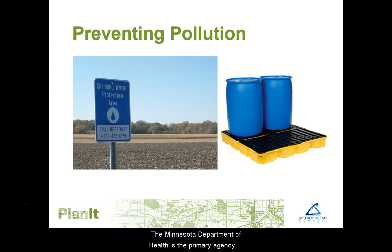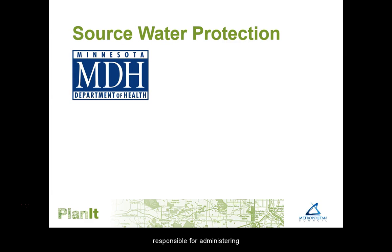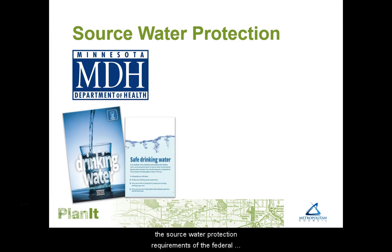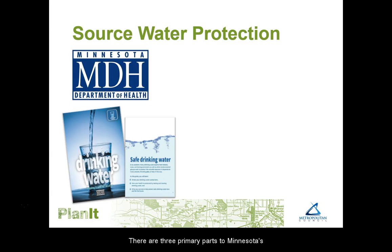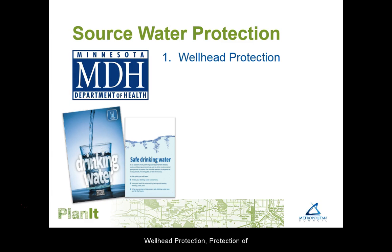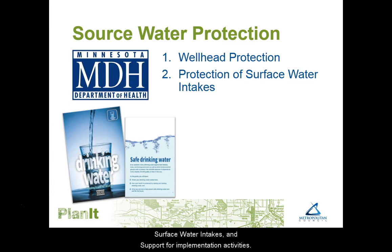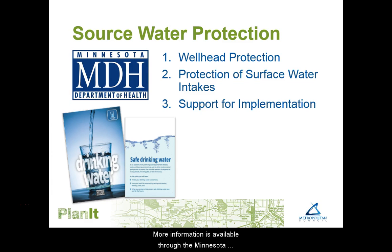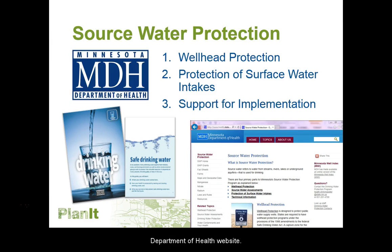Public health is protected and the expense of treating polluted water or building new infrastructure is avoided. The Minnesota Department of Health is the primary agency responsible for administering the source water protection requirements of the Federal Safe Drinking Water Act. There are three primary parts to Minnesota's source water protection program: wellhead protection, protection of surface water intakes, and support for implementation activities. More information is available through the Minnesota Department of Health website.